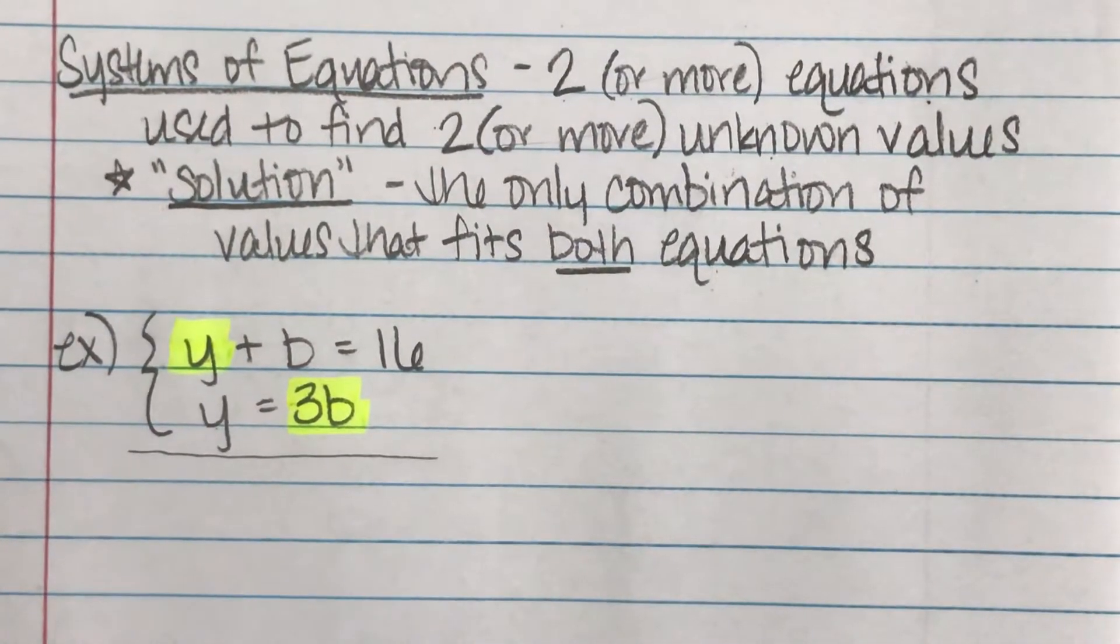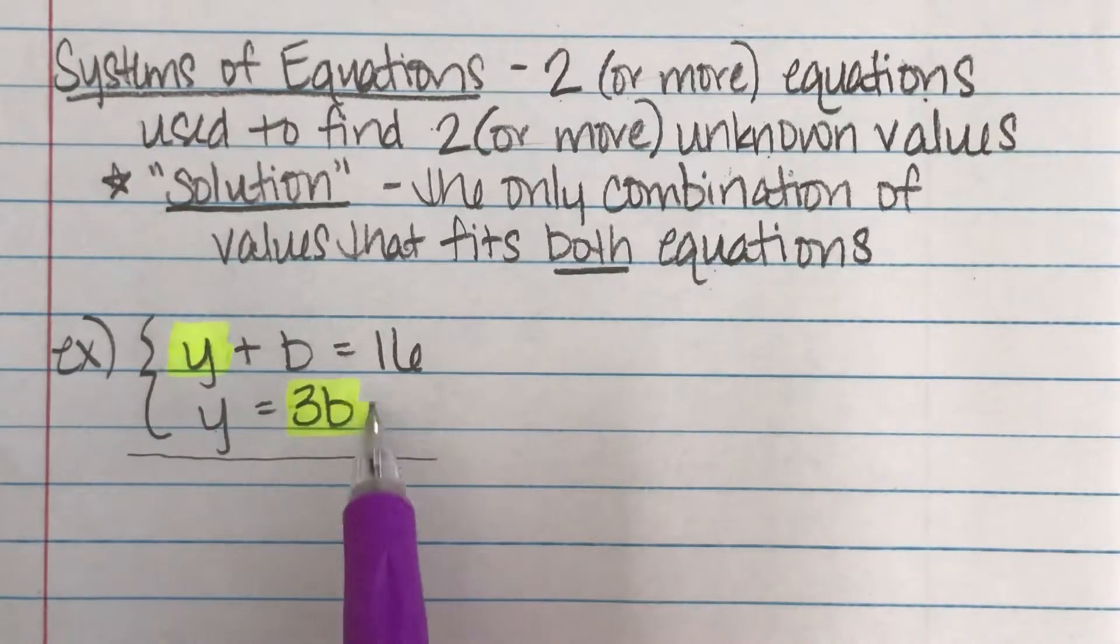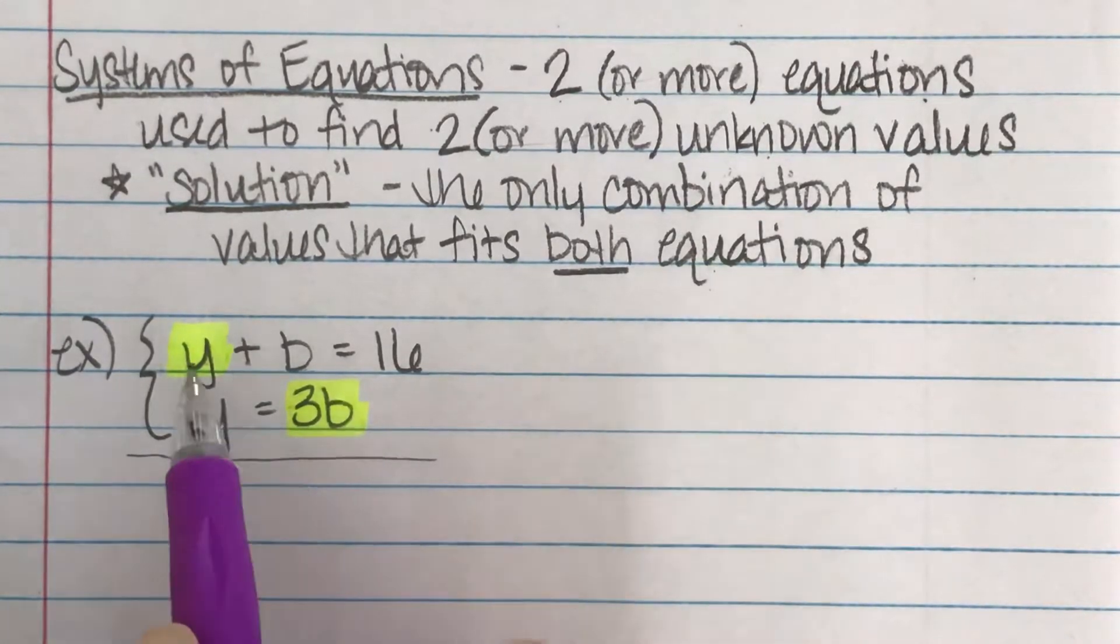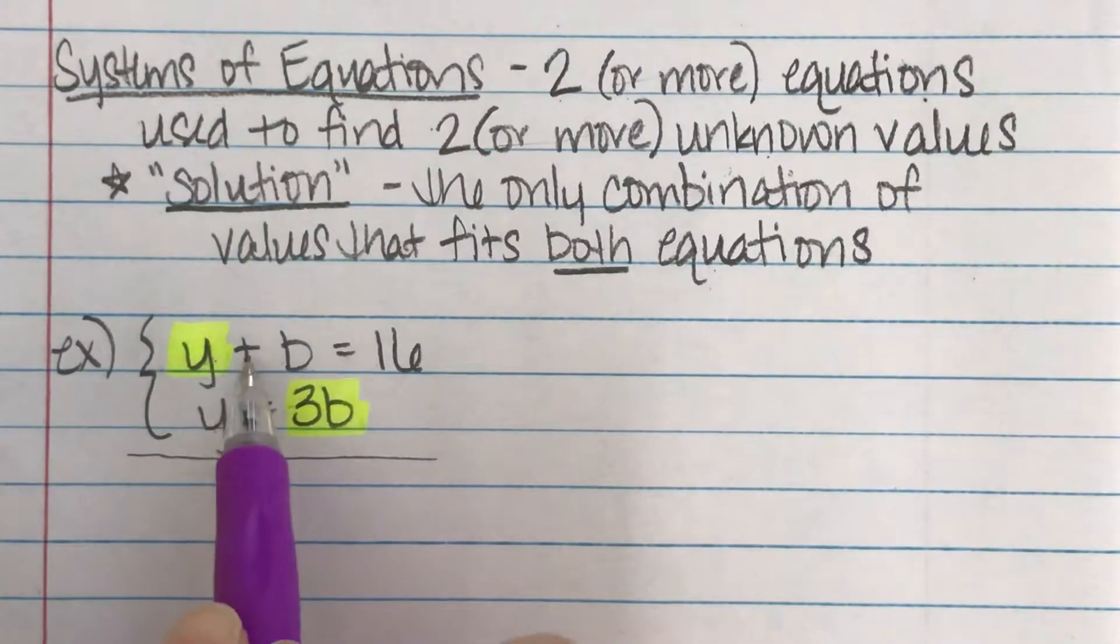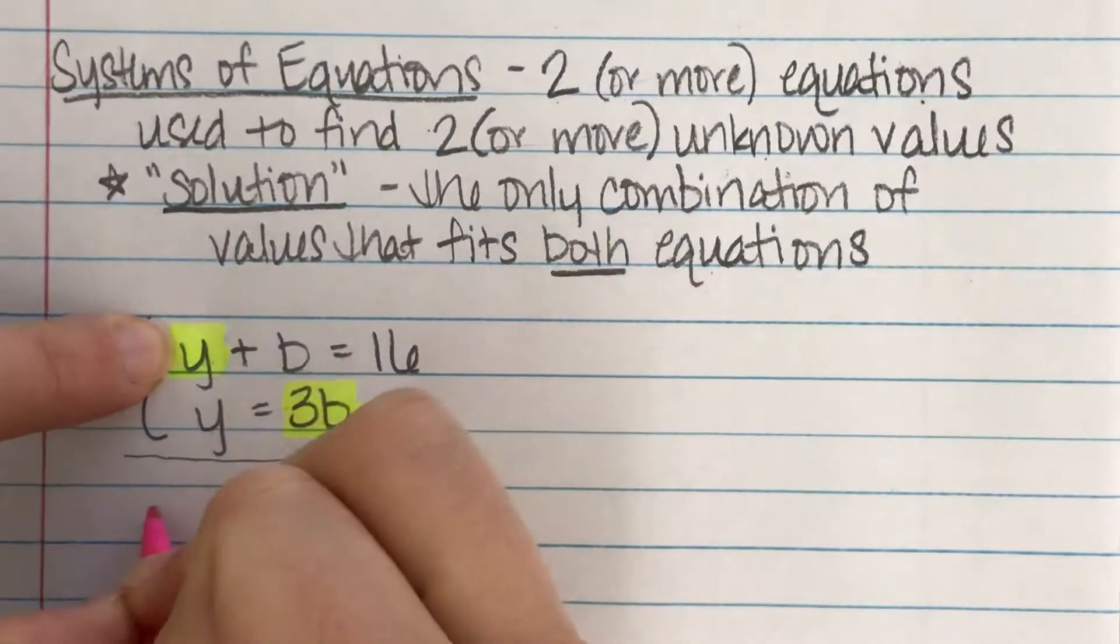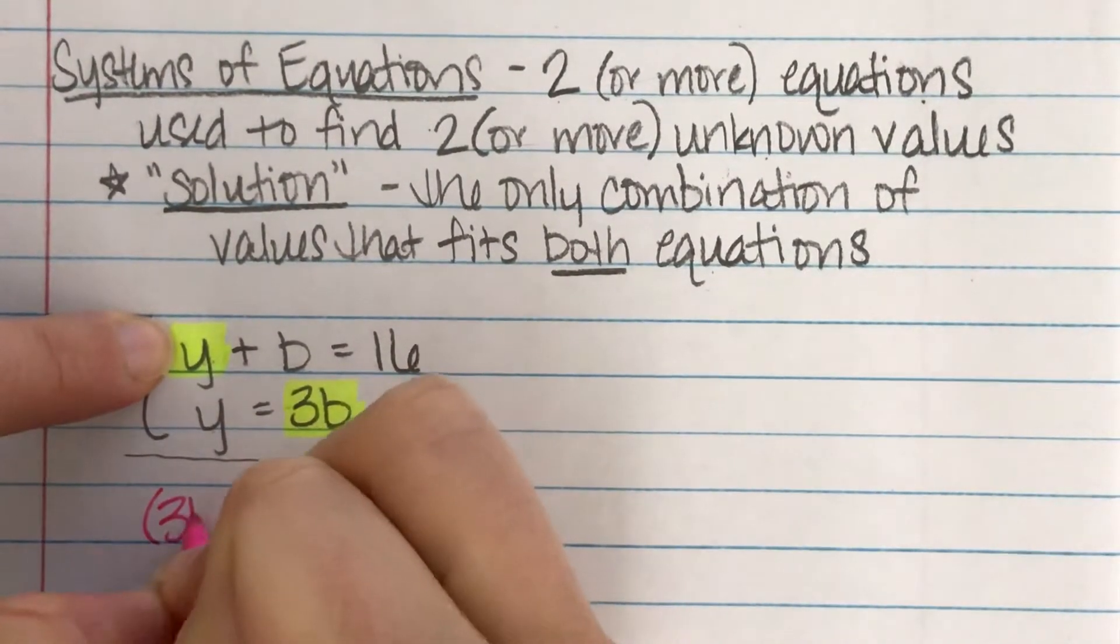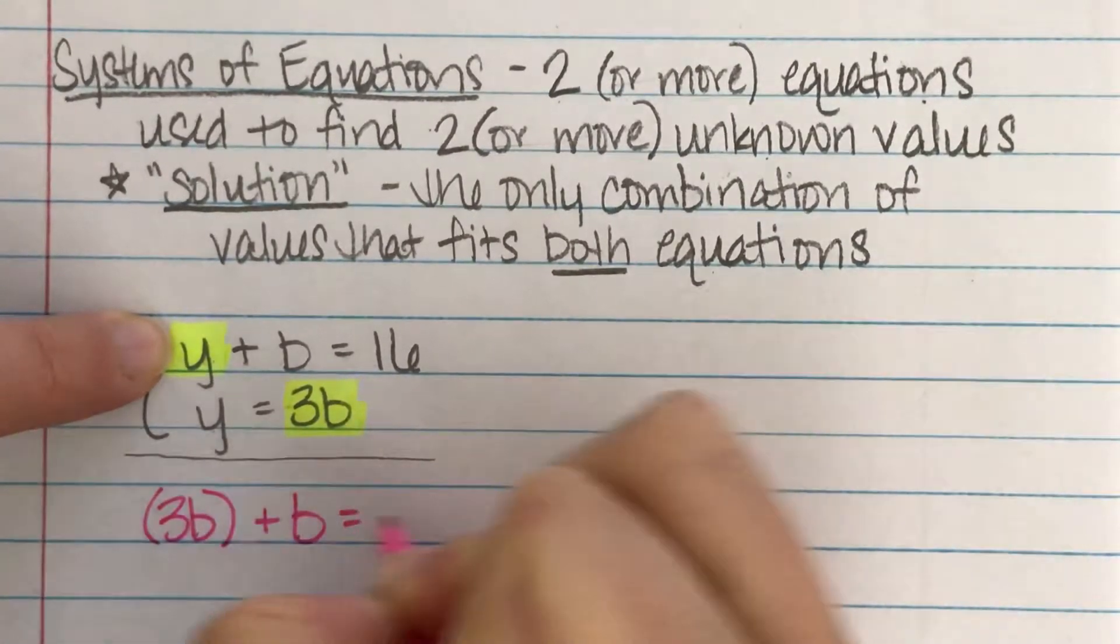So in class, I kind of mentioned it'd be like knowing that yellow was amarillo in Spanish. Up here, instead of saying yellow plus blue is 16, I could say amarillo plus blue is 16. So I can just replace and say, instead of y, I'm going to go ahead and put 3b and then plus b equals 16.